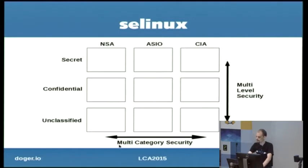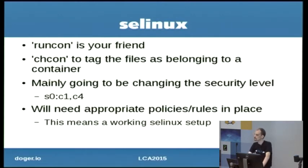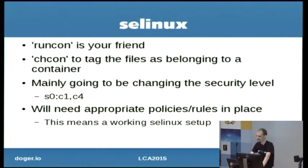With multi-category security, you can tag a container as belonging to a category — say NSA or ASIO — and even if a file is copied from the NSA container into the ASIO container, because it's tagged with NSA, access will be blocked. It's sort of like poly-instantiation for security frameworks. This is actually something LibVirt uses as part of the sVirt framework, so every virtual machine gets its own security context. If you have a working LibVirt setup, everything you need should be in place in terms of policy, though it does need a working SELinux setup.